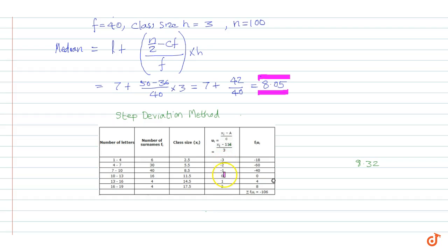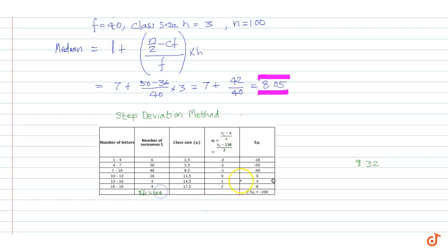We have calculated ui as shown in the table. Now we calculate fi × ui by multiplying the frequency of each class with its corresponding ui. For example, in the first class fi = 6 and ui = −3, therefore fi × ui = −18, and so on. The total number of surnames is σfi = 100, and σ(fi × ui) = −106.